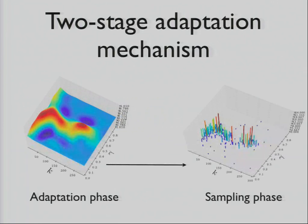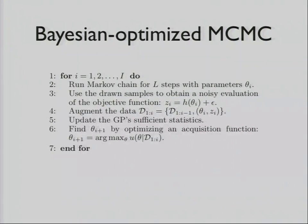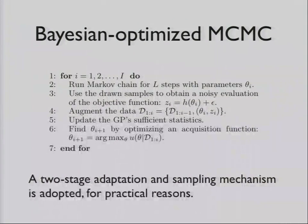This brings us to adaptive MCMC. Here we have this two-stage adaptation mechanism, where in the adaptation phase, we try a bunch of parameter settings and learn a model of the function, and then once we have that model, we construct a discrete stochastic policy out of it and use that to draw samples. It's a loop that looks like this. First, we run the Markov chain for a certain number of steps with a certain parameter, and then we use those drawn samples to get a noisy evaluation of the objective function, and then we augment the data and update the GP's sufficient statistics, and then optimize over that GP to get the next parameter settings to query. Because the GP has n cubed complexity with respect to the number of query points, we do this two-stage thing, so we don't have to adapt as often.